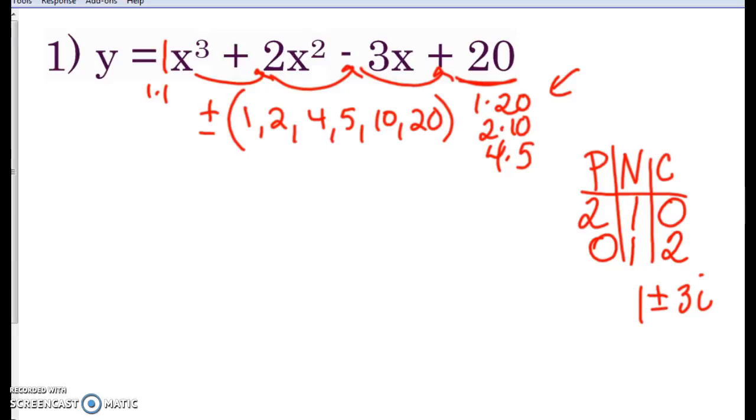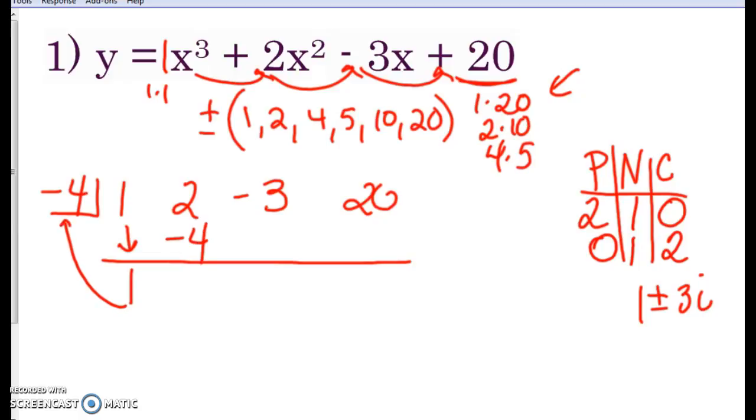So let's try a negative number. I'm going to write out all my coefficients. You've got to pick from this long list of possibles. Now, I happen to know what it is, so I'm going to get it right on the first try. Negative 4. I'm going to put in negative 4. You bring down this 1. Then you multiply the 1 times the negative 4. You get negative 4. Combine those two numbers. You get negative 2.